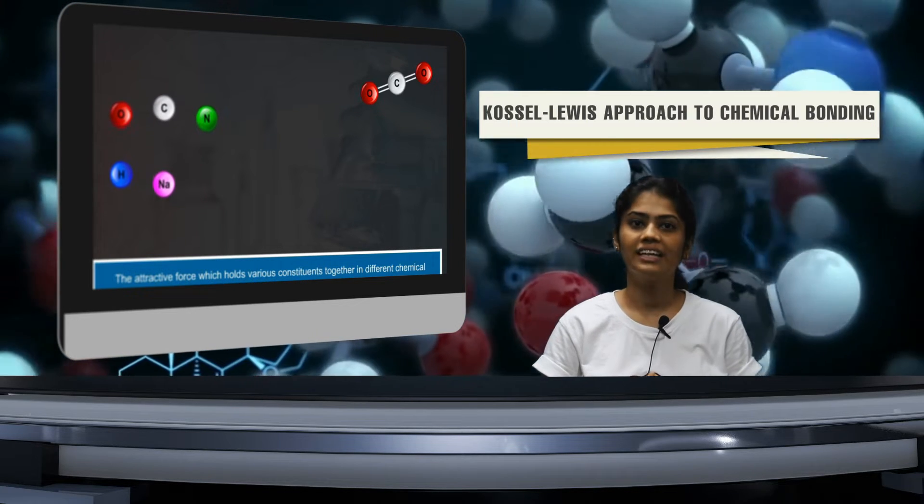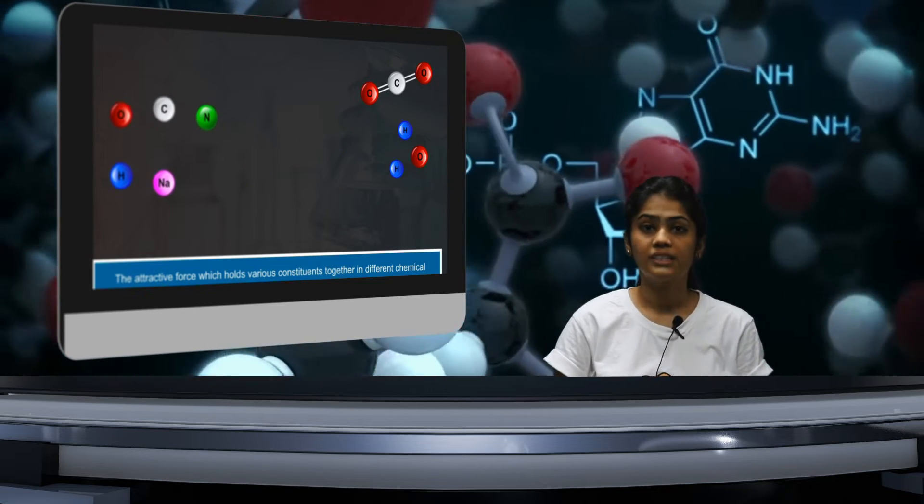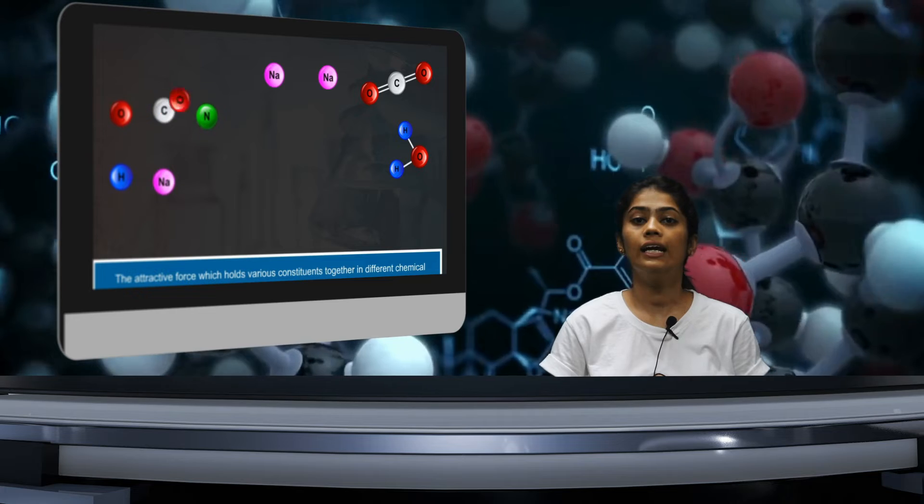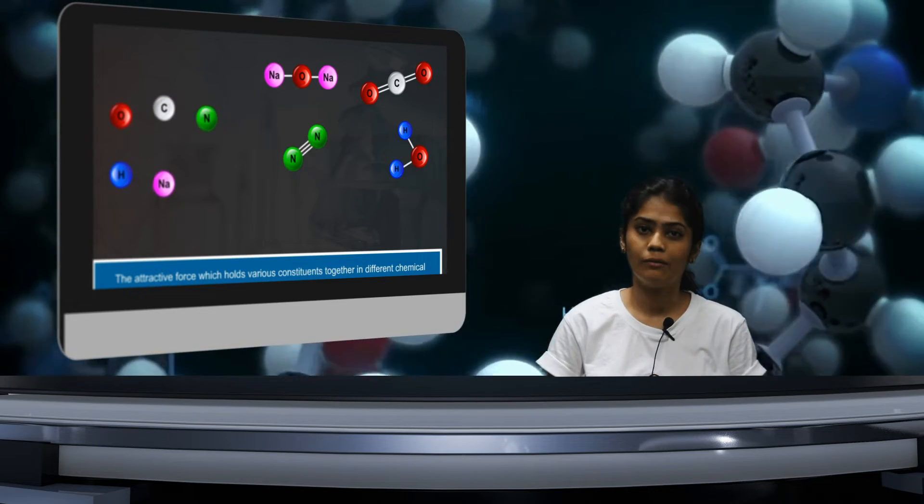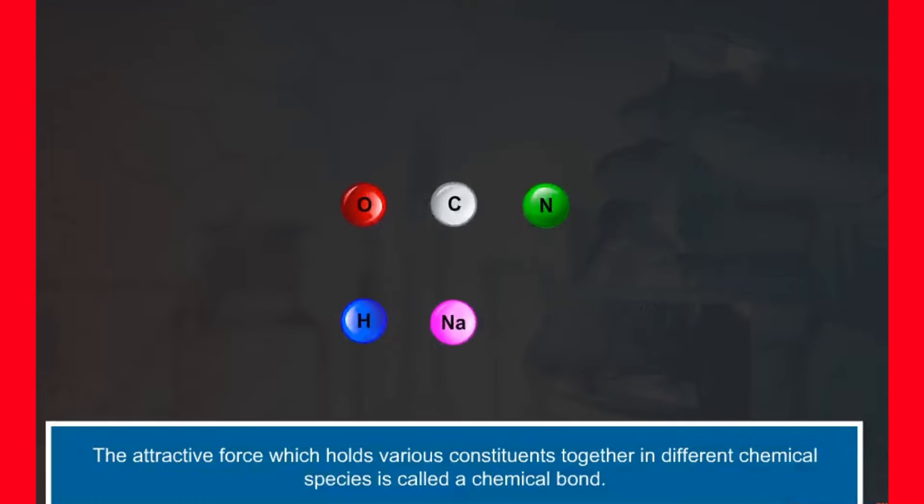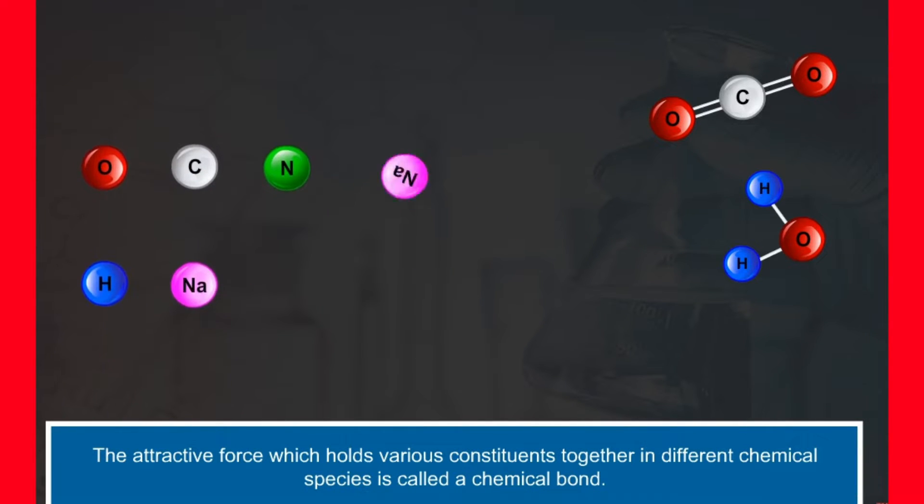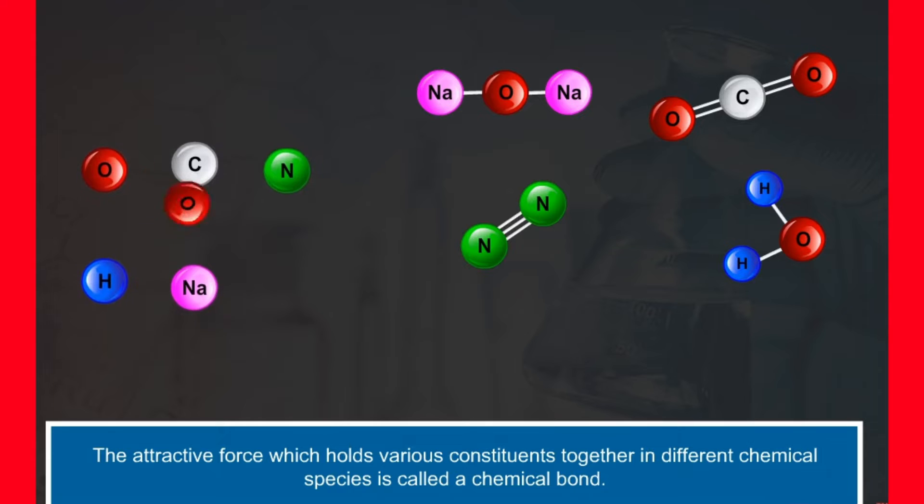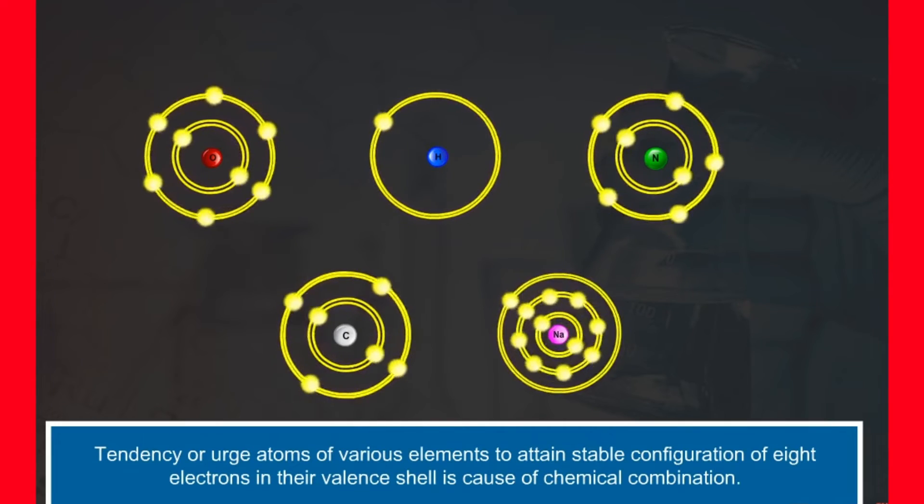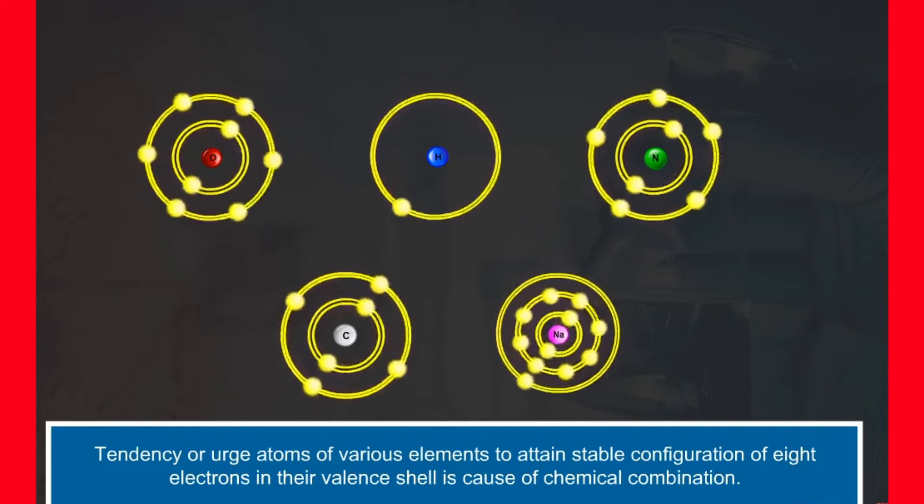The first topic that we will be studying in chemical bonding is Kossel Lewis approach to chemical bonding, which will give us some insight about what we are trying to do with chemical bonding. Matter is made up of one or different types of elements. Under normal conditions, no other element exists as independent atom in nature except noble gases. The attractive force which holds various constituents together in different chemical species is called a chemical bond. Tendency or urge of atoms of various elements to attain stable configuration of 8 electrons in their valence shell is the cause of chemical combination.